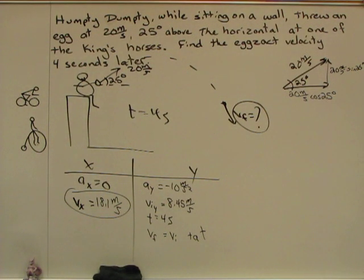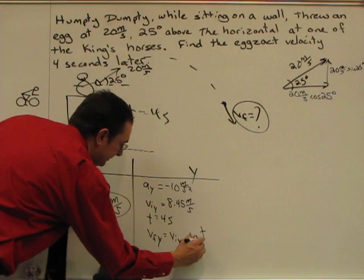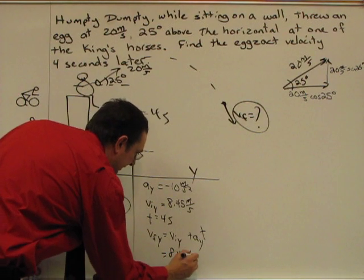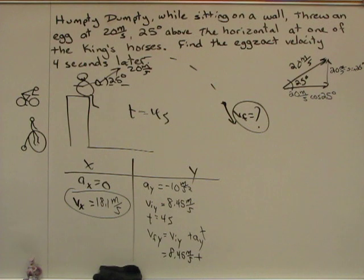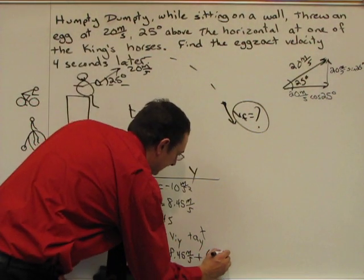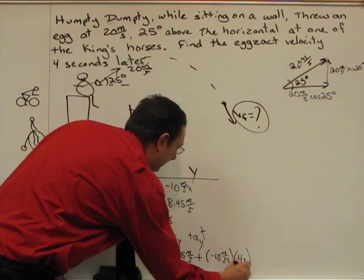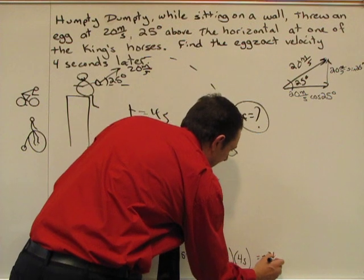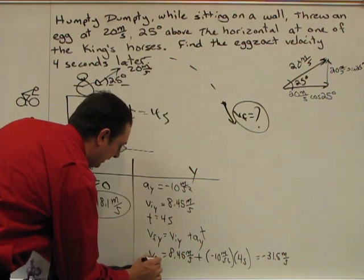Vf is equal to vi plus a times t. That equation will give you the final velocity in the y direction. If you want to, you can make it y specific, but put in y subscripts after each of those values. The final velocity in the y direction, initial velocity in the y direction, and acceleration in the y direction. Substitute values in. Initial velocity is 8.45 meters per second up. It is positive. And then, the acceleration is negative 10 meters per second squared times the time, which is 4 seconds. So, 4 seconds later, this thing will have changed velocity by 40 meters per second. And, in fact, 40 meters per second down, which means you're going to take 8.45 meters per second, subtract 40 from that, and you get about negative 31.5.